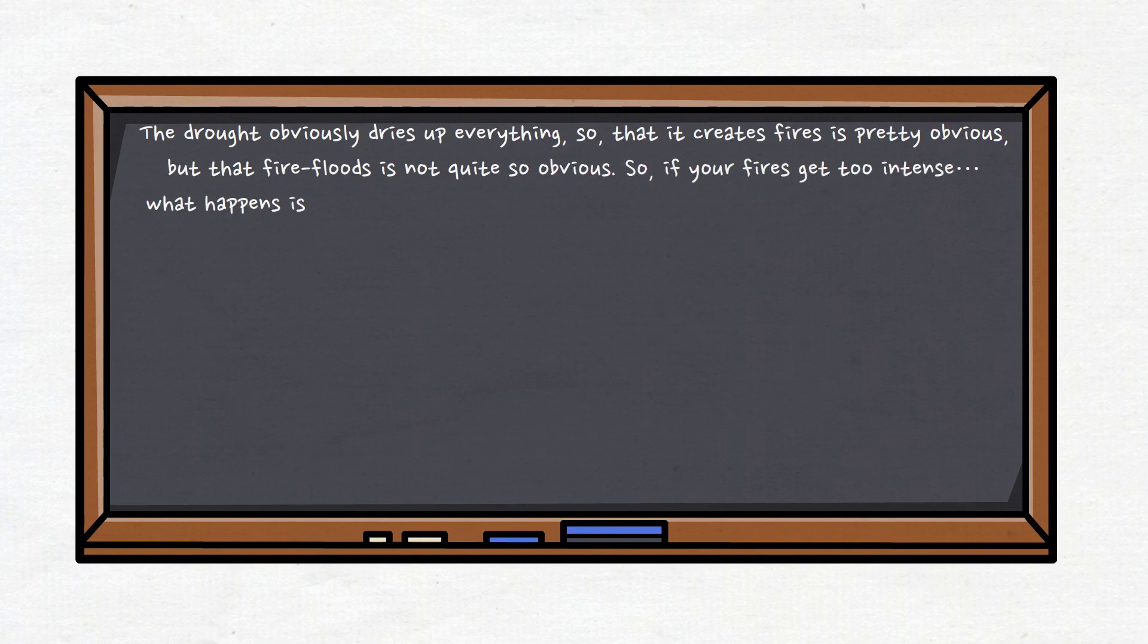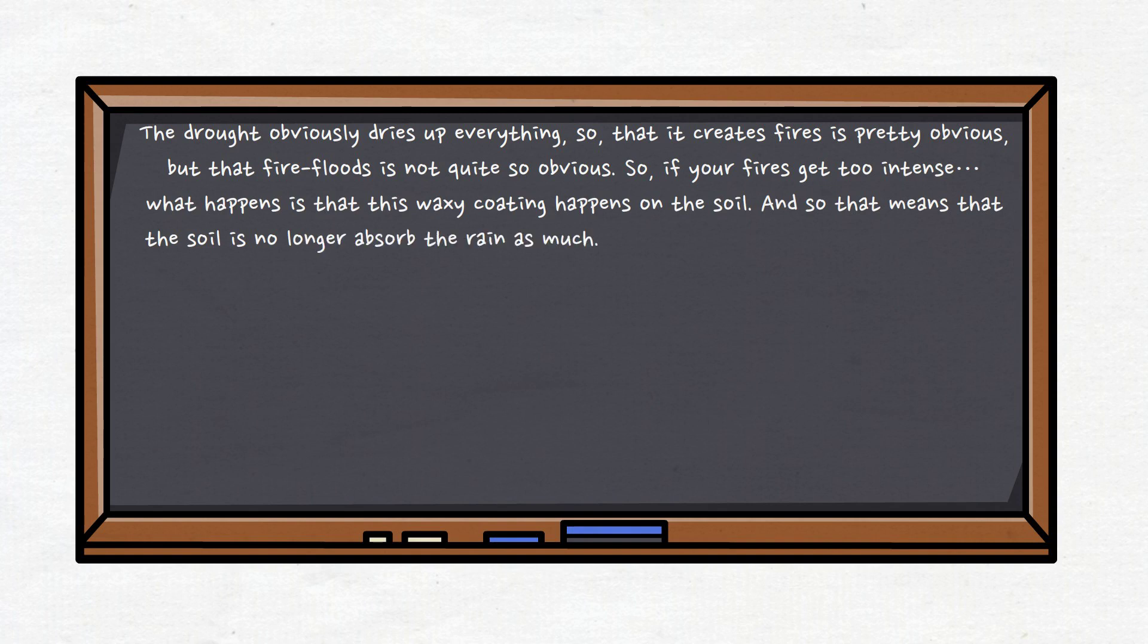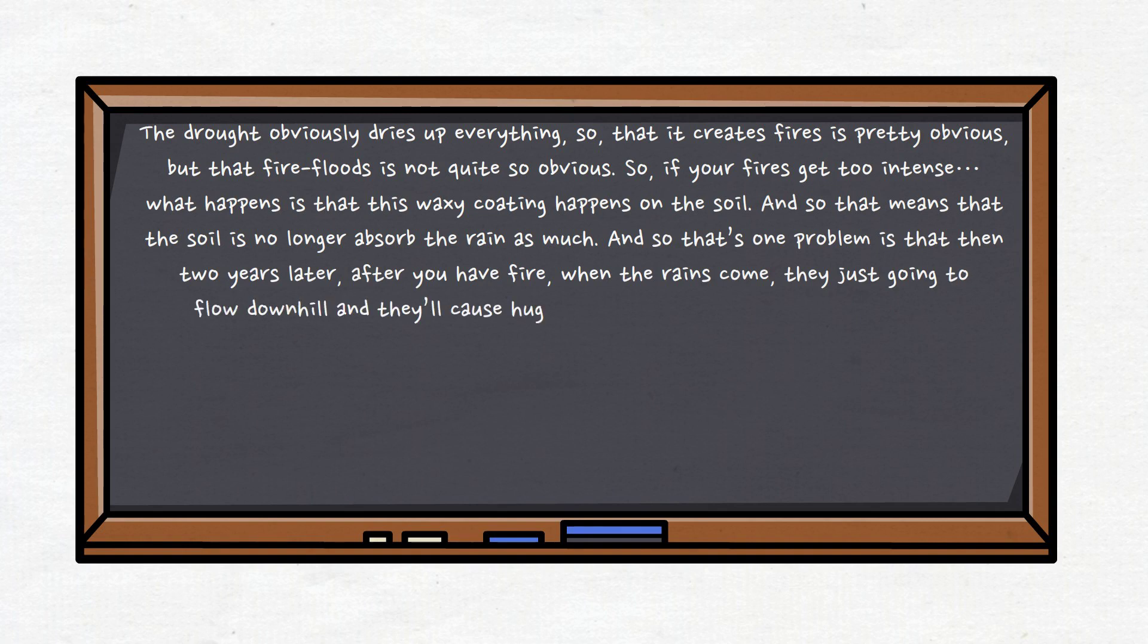Traditionally in nature you do have fires, and they're smaller scale. But if it gets too intense, a waxy coating happens on the soil, which means the soil is no longer able to absorb the rain as much. So that's one problem: two years later after your fire, when the rains come, they're just going to flow downhill and cause huge floods below.